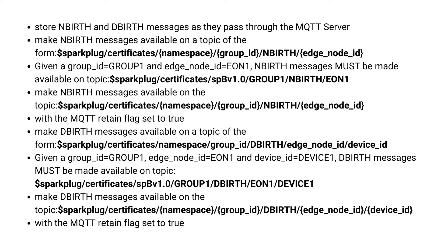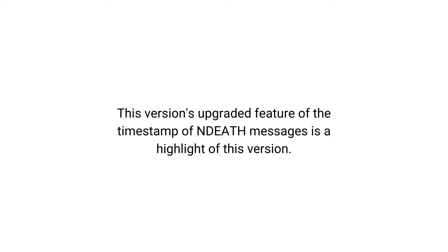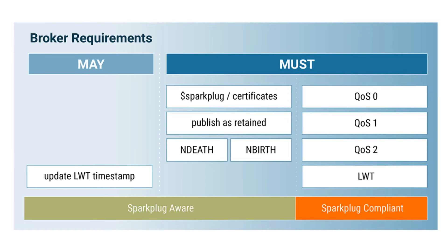These are the characteristics Sparkplug-aware MQTT servers must have. Would you like to know more about these elements? You may find them in our full blog post on what's new in Sparkplug 3.0 — we have placed the link in the video description. In addition, a Sparkplug-aware MQTT server may also replace N-death messages timestamp. If it does, it must set the timestamp to the UTC it attempts to deliver the N-death to subscribed clients. The slide here summarizes the must-have features and may-have features for Sparkplug-compliant Broker and Sparkplug-aware Broker.